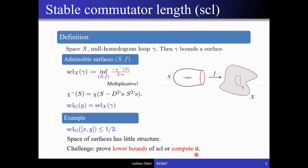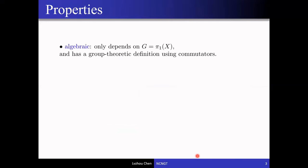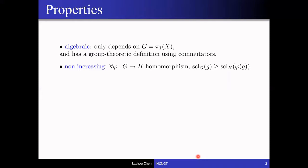One of our focuses today is to talk about how one can compute the stable commutator length. It is interesting partly because it is related to understanding surfaces in spaces. It also has nice properties: it only depends on the fundamental group, and there is an algebraic definition using commutators. It is non-increasing under any group homomorphism, because the homomorphism induces a map on corresponding spaces that can push forward admissible surfaces, so stable commutator length can never go up. In particular, if the map is an isomorphism, we have equality, so stable commutator length is a kind of invariant function on groups.